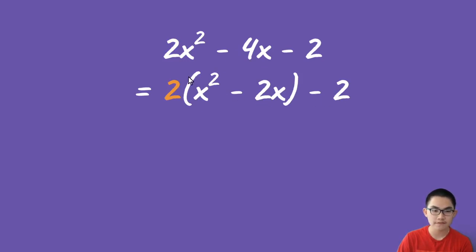Notice that you have only factored out the number 2 for the first two terms only. We're not going to do anything with the last term yet. The first step is pretty straightforward.